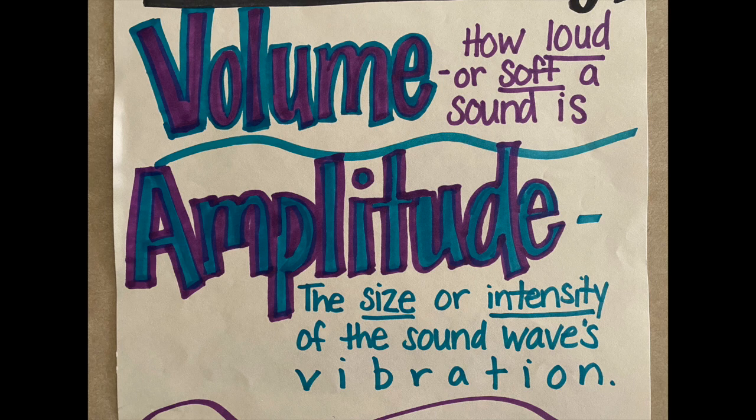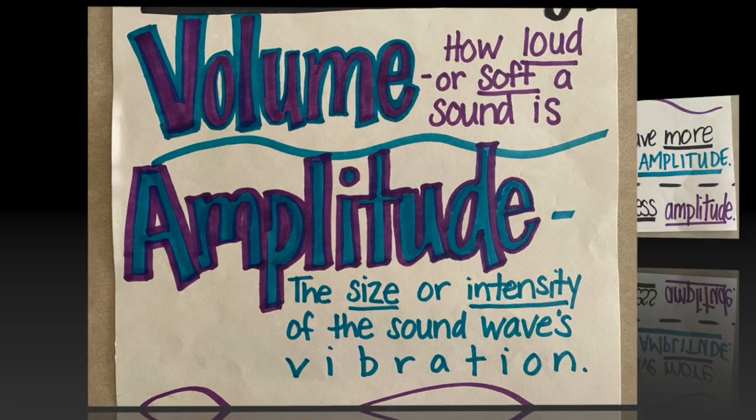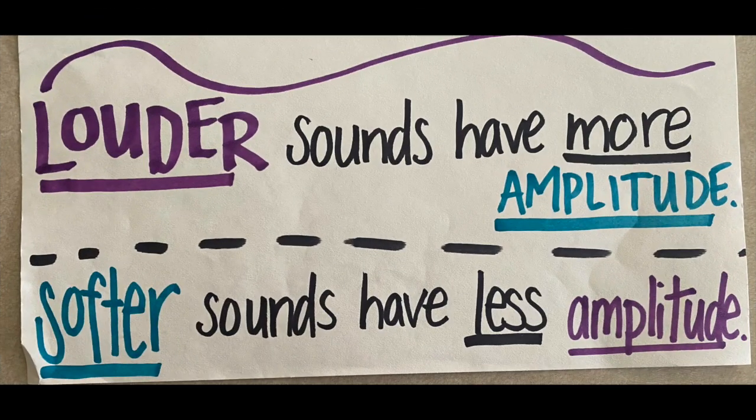When we talk about volume, that's how loud or soft a sound is. Amplitude is the size or intensity of the sound wave's vibration. Louder sounds have more amplitude, and softer sounds have less amplitude.